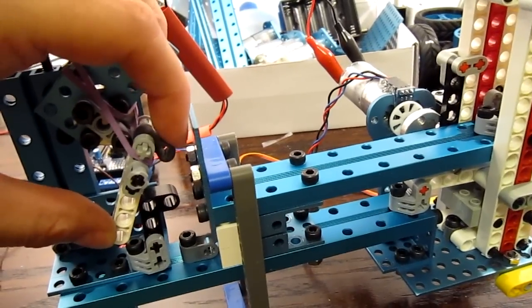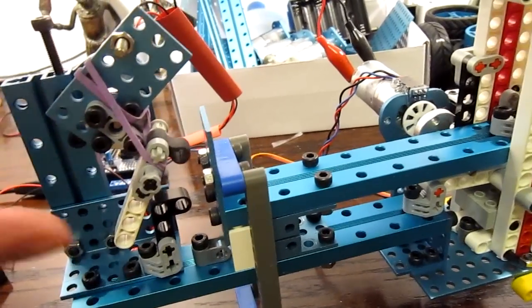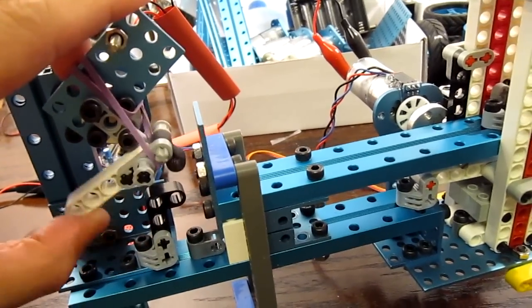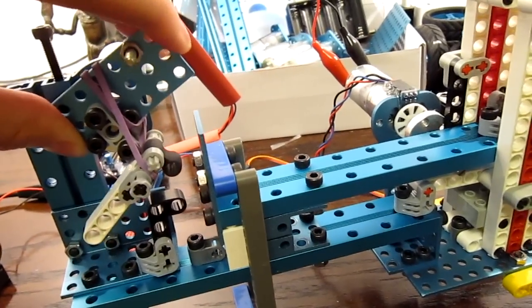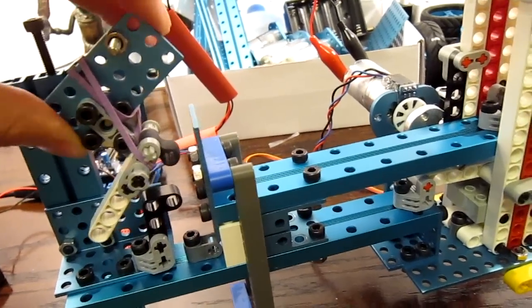So what I have is I have a little rubbery Lego part here and this thing is on this swivel arm. So what happens is as this thing turns, the first movement is just a brute force go down.